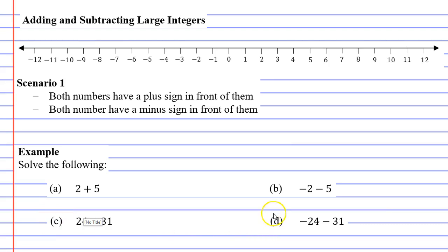So we're going to look at two possible scenarios. In this video, we're just going to focus on scenario one, and then in the next video we'll talk about scenario two. Scenario one is such that either both numbers have a plus sign in front of them or both numbers have a minus sign in front of them.